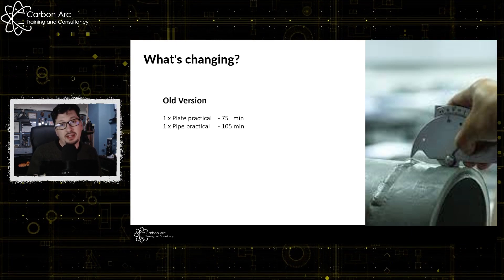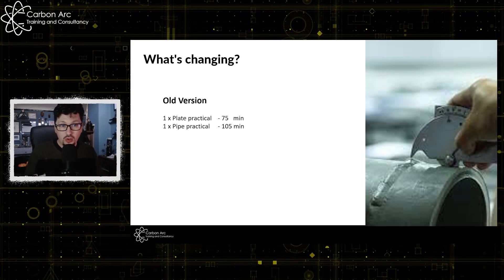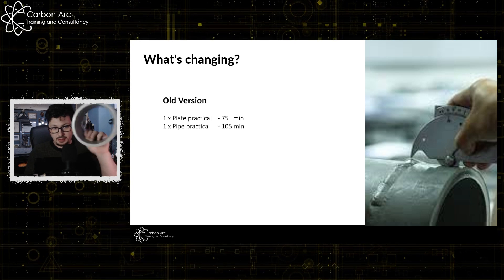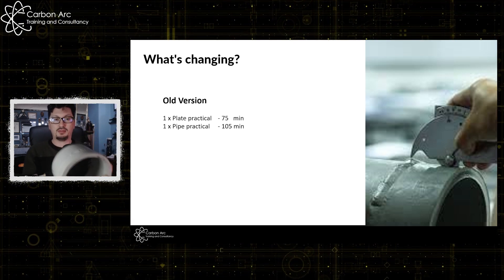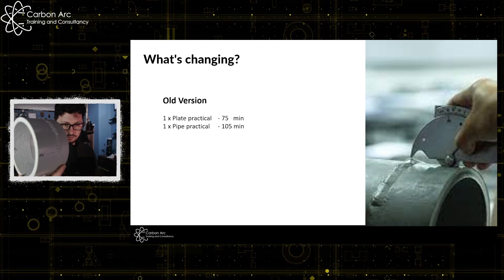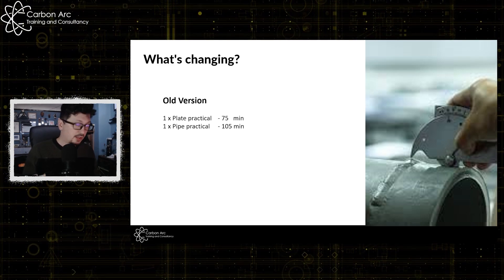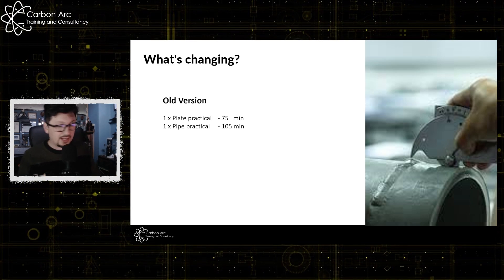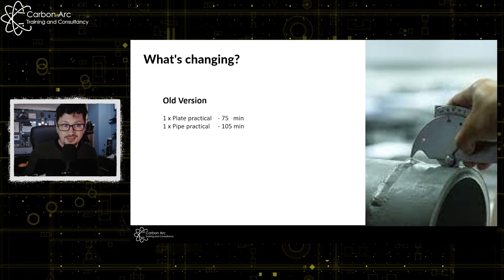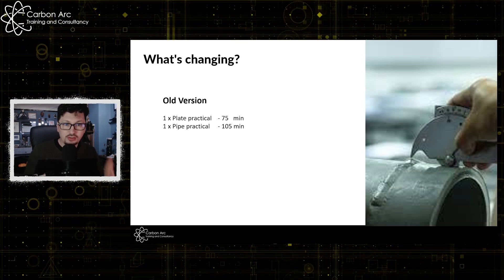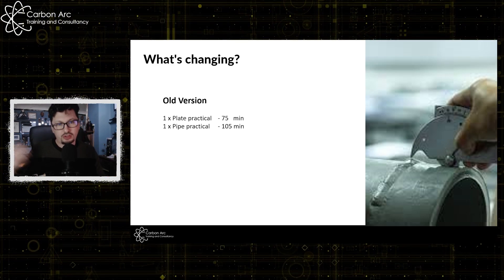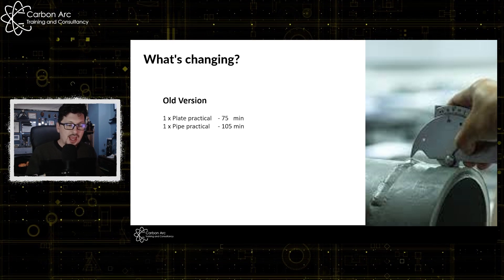So the older examination that we've all come to know is a pipe like this and a plate, which is very similar. Classic sample. Look for the defects, write onto a report matrix and then answer some 20 multiple choice questions for the plate and 20 multiple choice questions for the pipe.